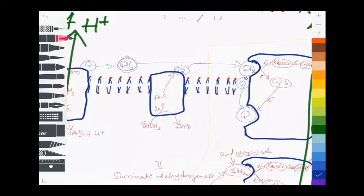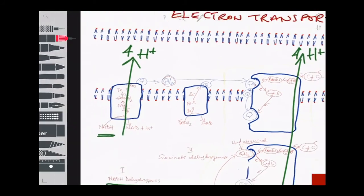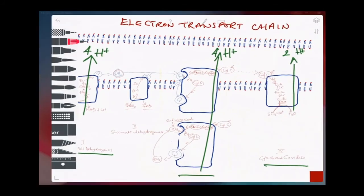It's crucial to understand that because the oxidation of FADH2 skips Complex I, it results in fewer protons being pumped into the intermembrane space — only six protons total, compared to ten for NADH.